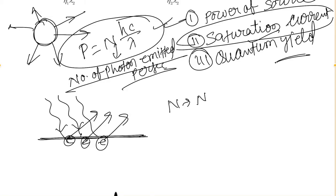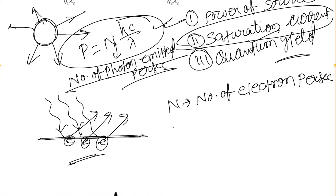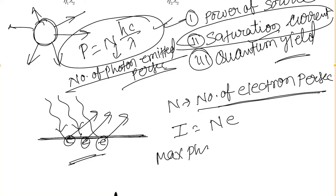Suppose N is the number of electrons emitted per second from the surface. Then the photo current is equal to N·e, where e is the electronic charge equal to 1.6×10⁻¹⁹ coulombs. Regarding saturation current and how it relates to photo current — the maximum photo current is said to be the saturation current. This is an important point to note: maximum photo current = saturation current.